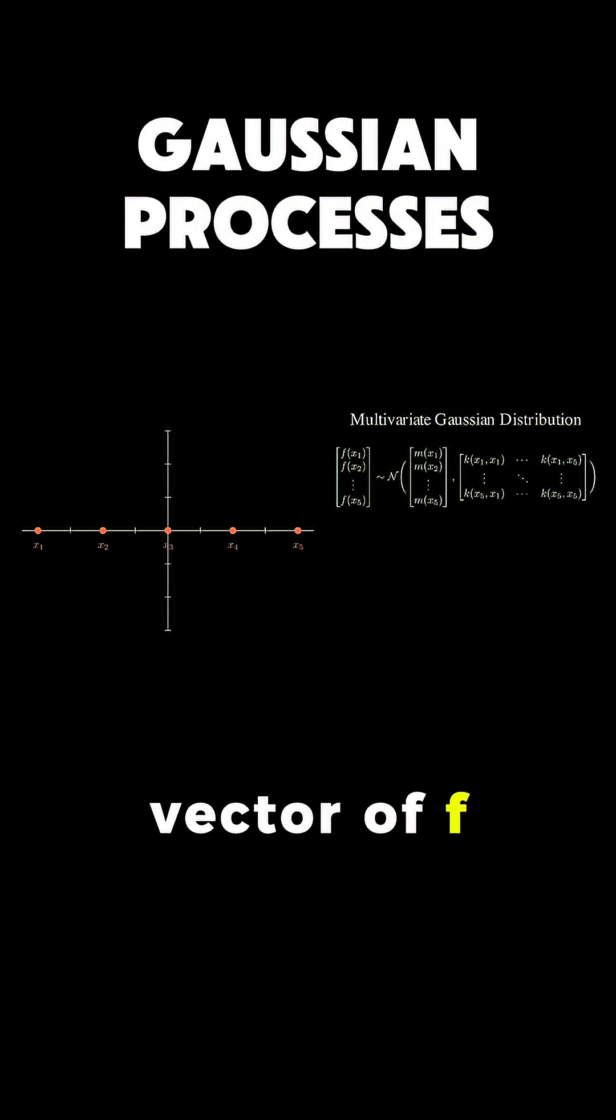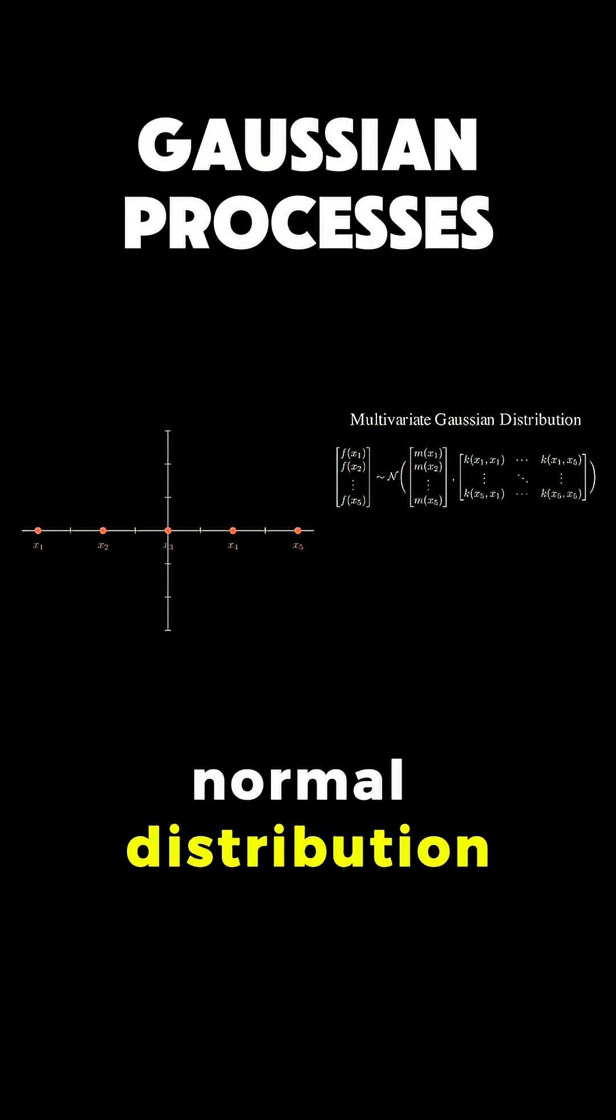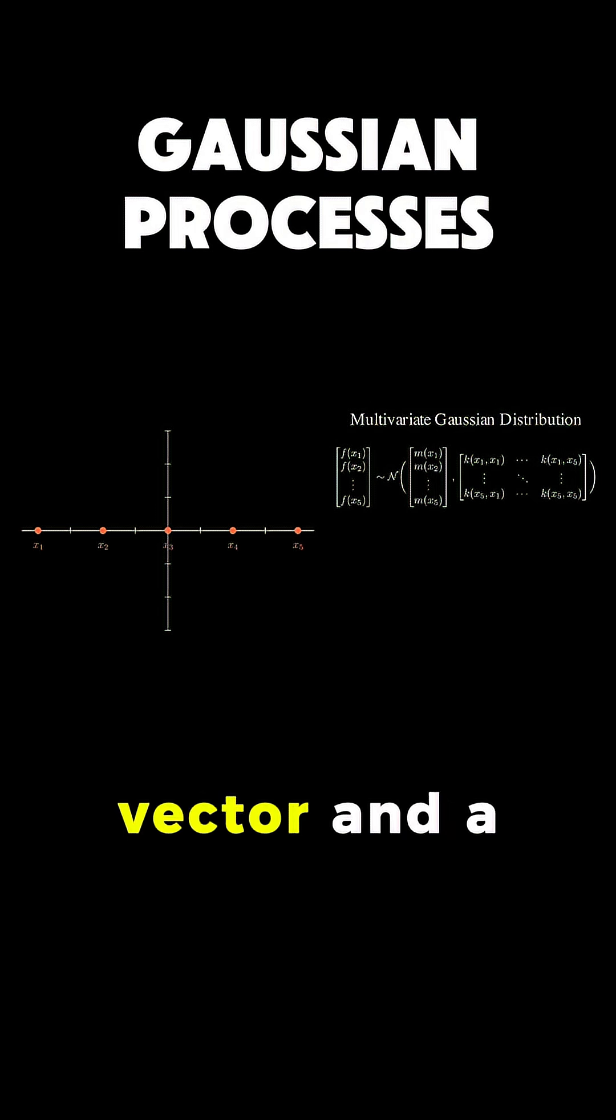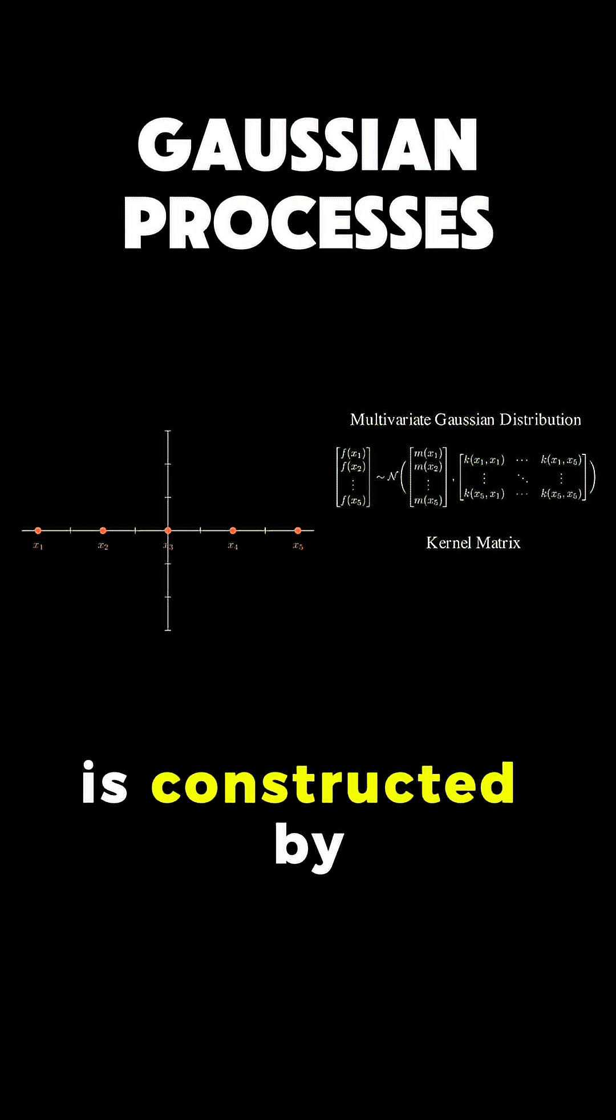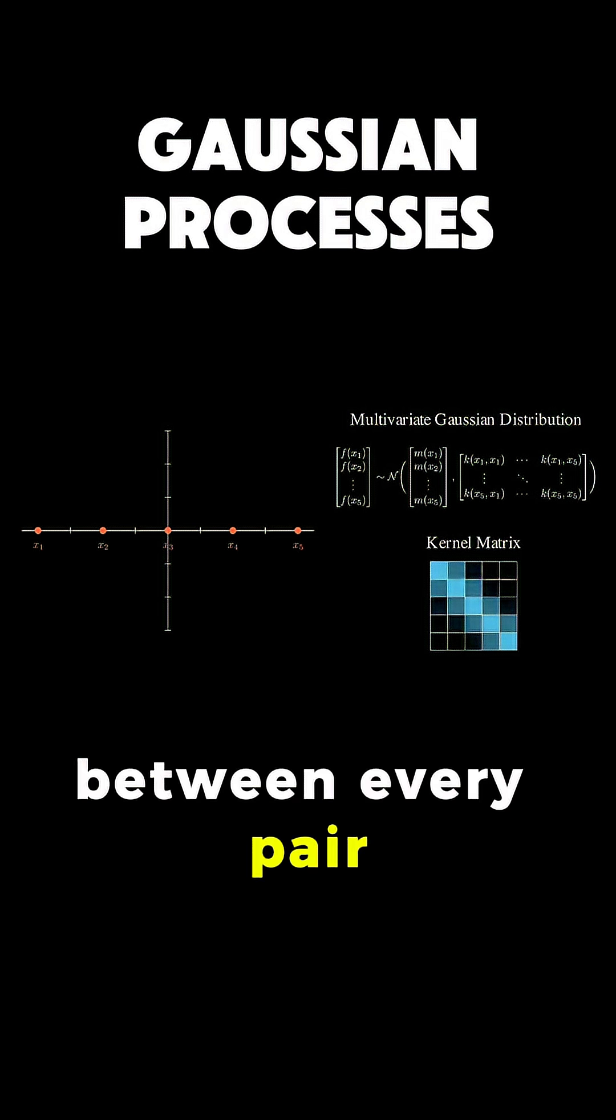as a vector [f(x1) through f(x5)] distributed according to a multivariate normal distribution, with a mean vector and a covariance matrix. This covariance matrix is constructed by evaluating our kernel function between every pair of points.